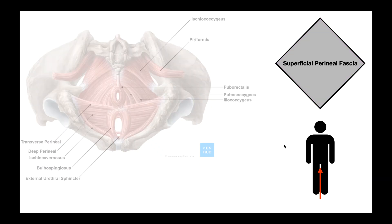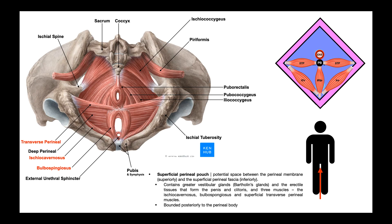The superficial perineal pouch contains the greater vestibular glands (also called Bartholin's glands), the erectile tissues that form the penis and clitoris, and the three muscles we just talked about. It is bounded posteriorly by the superficial transverse perineal muscles and the perineal body. Now, before we peel off this layer and go to the perineal membrane, let's spend a little bit of time on these muscles.